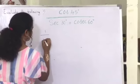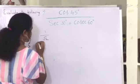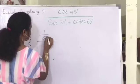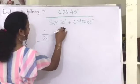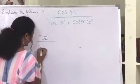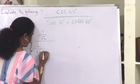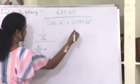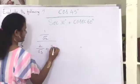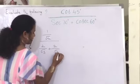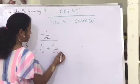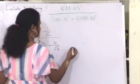We have 1 by root 2 divided by secant 30 degree. The value of secant 30 degree is 2 by root 3, and cosecant 60 degree value is also 2 by root 3.